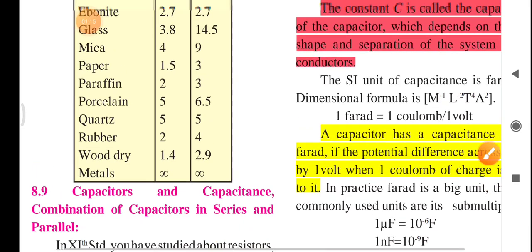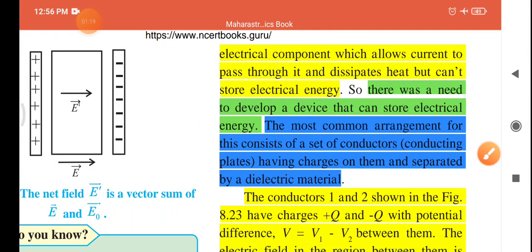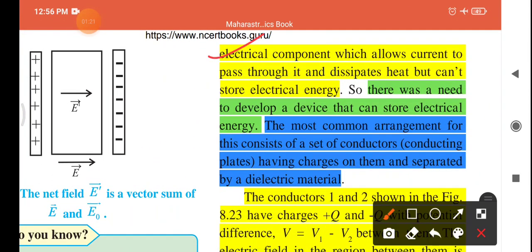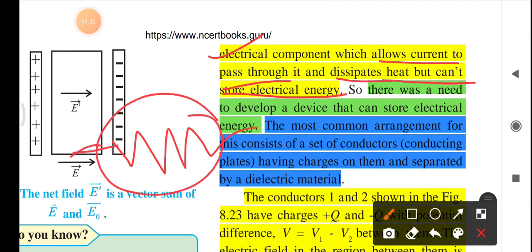What is the resistor then? A resistor is an electrical component which allows current to pass through it and dissipates heat, but cannot store the electrical energy. This is the symbol of the resistor. Resistance is the phenomenon and resistor is a device.